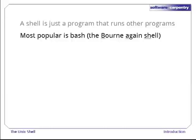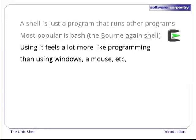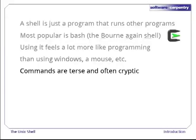Bash is the default shell on most modern implementations of Unix, and also comes with Cygwin, the Unix on Windows toolkit that we're using in this course. Using it, or any other shell, feels a lot more like programming than like using Windows and mice. Commands are terse, often only a couple of characters long, and their names are often cryptic. So why should you use it?